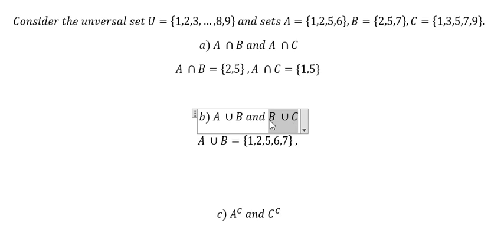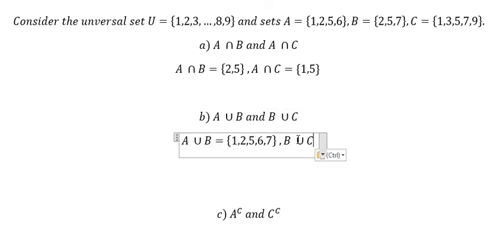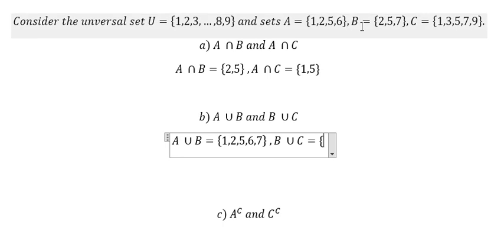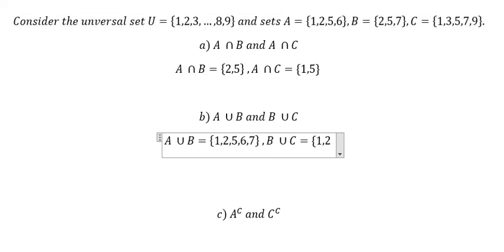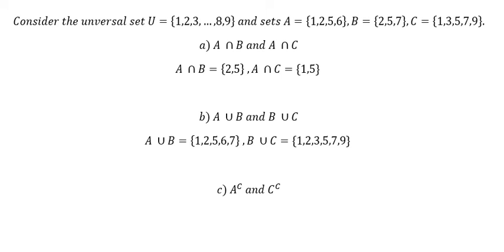The next one is the union between B and C. We have {2, 5, 7} and {1, 3, 5, 7, 9}. We combine everything, so the answer is B ∪ C = {1, 2, 3, 5, 7, 9}. Question C is about the complement.